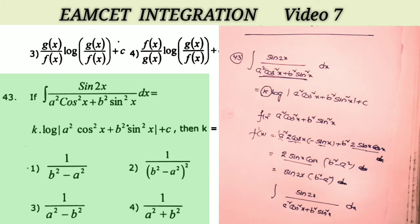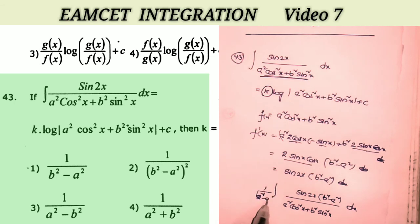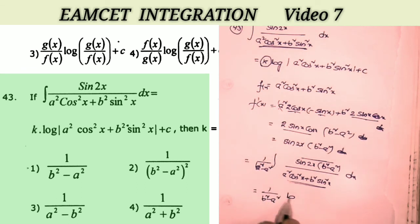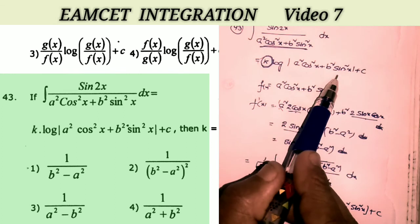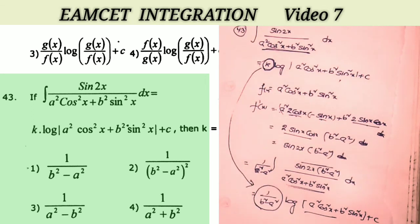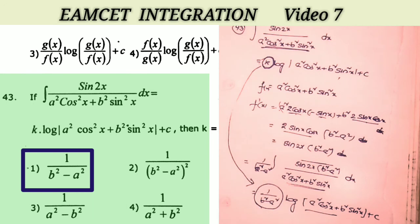The given integral has sin 2x in the numerator. Since f'(x) = sin 2x · (b² − a²), I multiply and divide by (b² − a²) to get (1/(b² − a²)) · ∫ f'(x)/f(x) dx. This is in the form f'(x)/f(x), whose integral is log f(x). So the answer is (1/(b² − a²)) · log(a² cos² x + b² sin² x) + c. Comparing with k · log(a² cos² x + b² sin² x) + c, we get k = 1/(b² − a²). That is the first option.